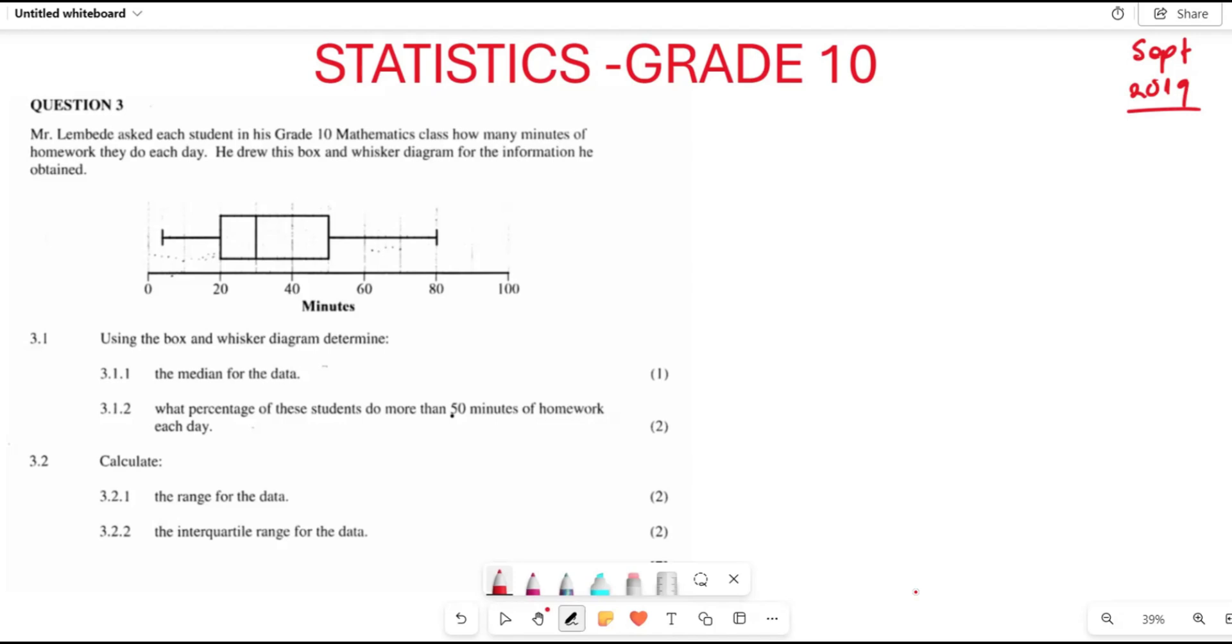Mr. Limberte asked each of his grade 10 mathematics class how many minutes of homework they do each day. He then drew this box-and-whisker diagram for the information he obtained. The first question wants us to find the median of this data.